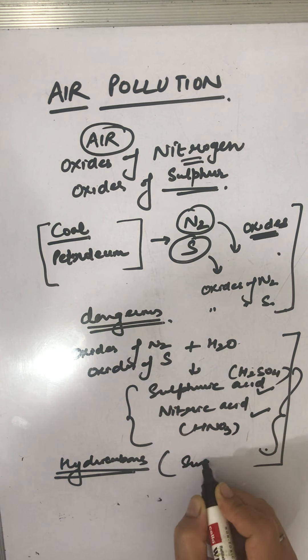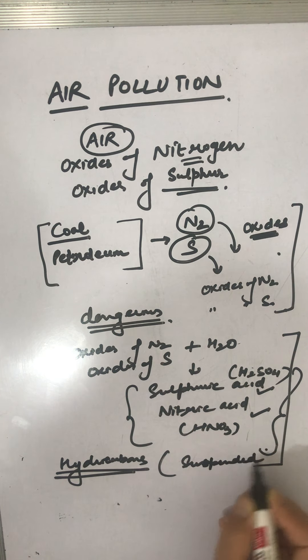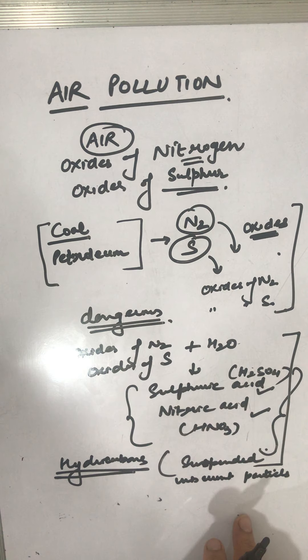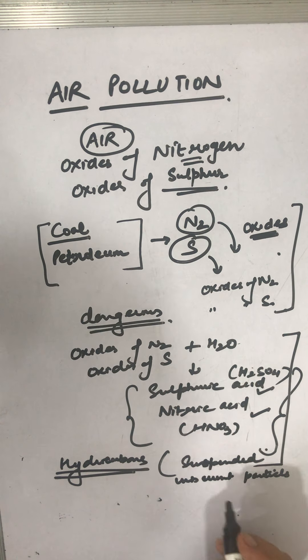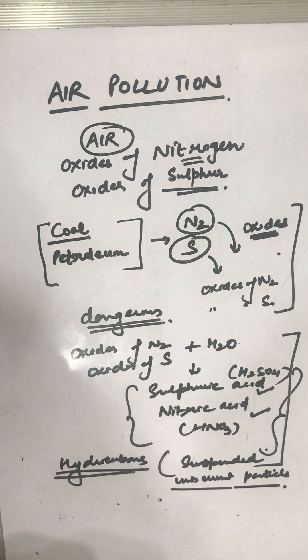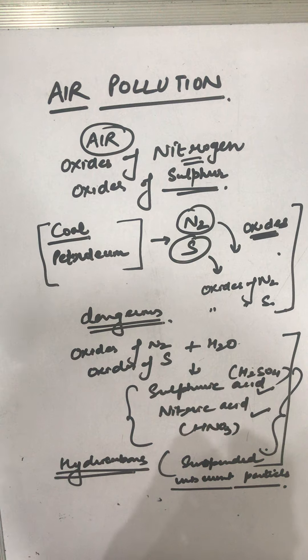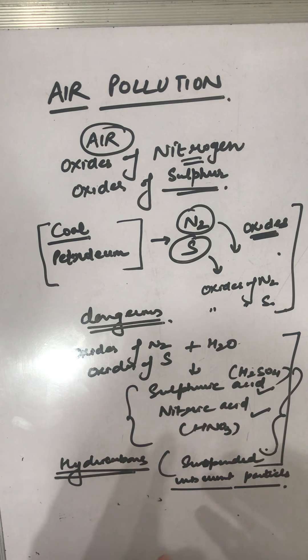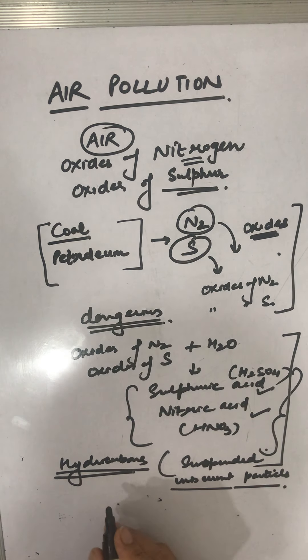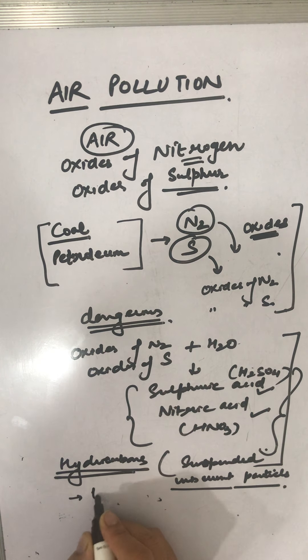Hydrocarbons means the suspended unburnt particles, which could be unburnt carbon particles also. These lower down the visibility, especially in cold weather when the water condenses and these are also present there. It ultimately leads to the formation of smog, so it lowers visibility along with formation of smoke.